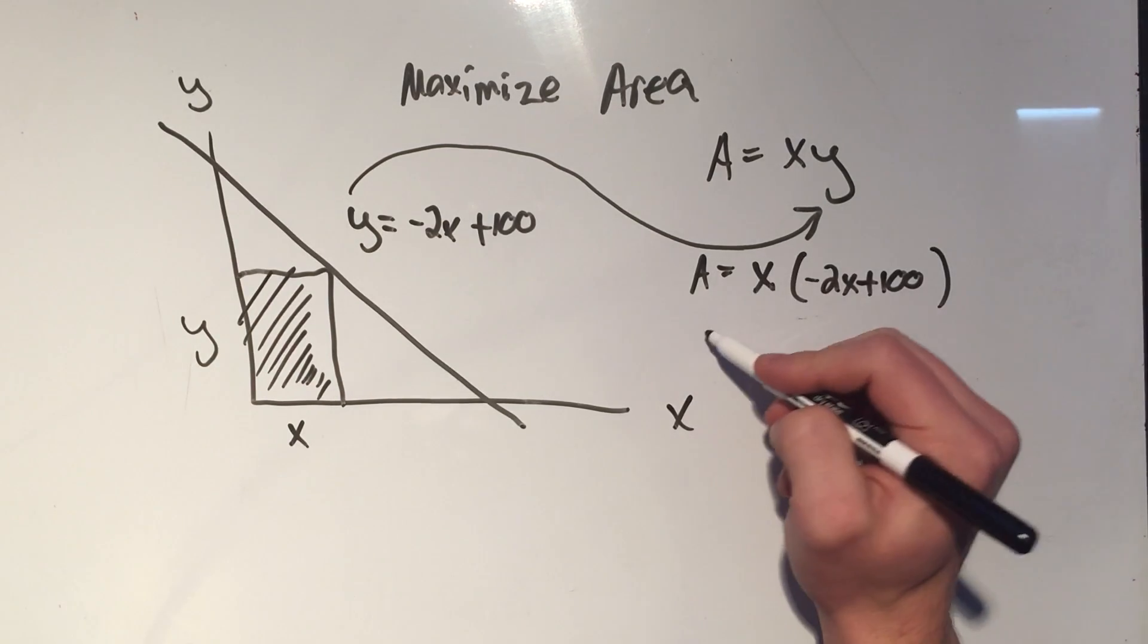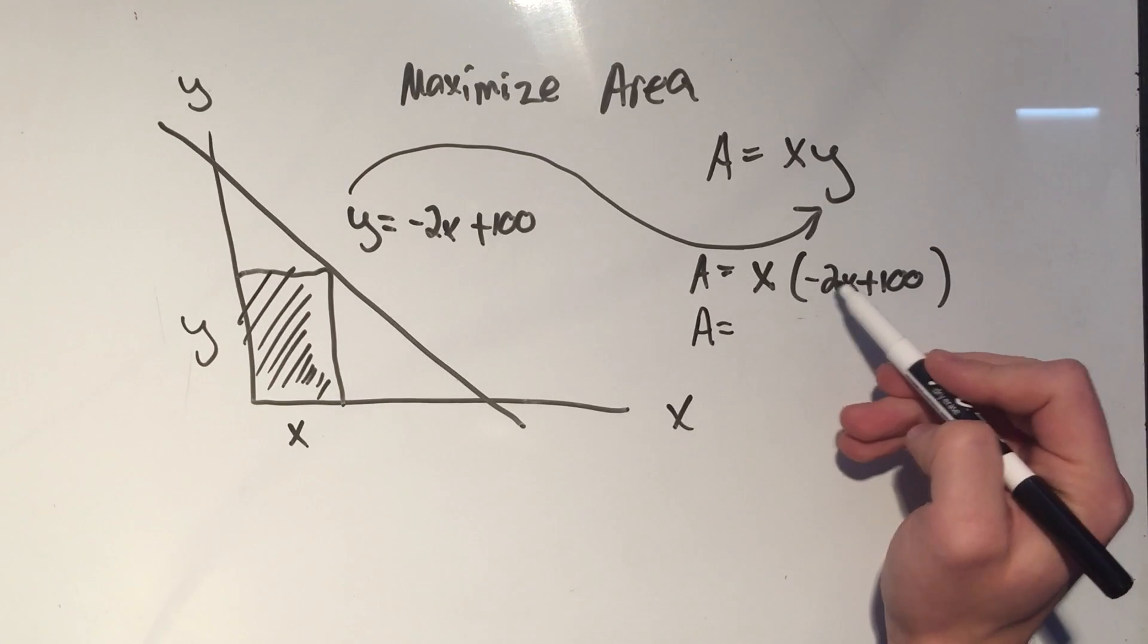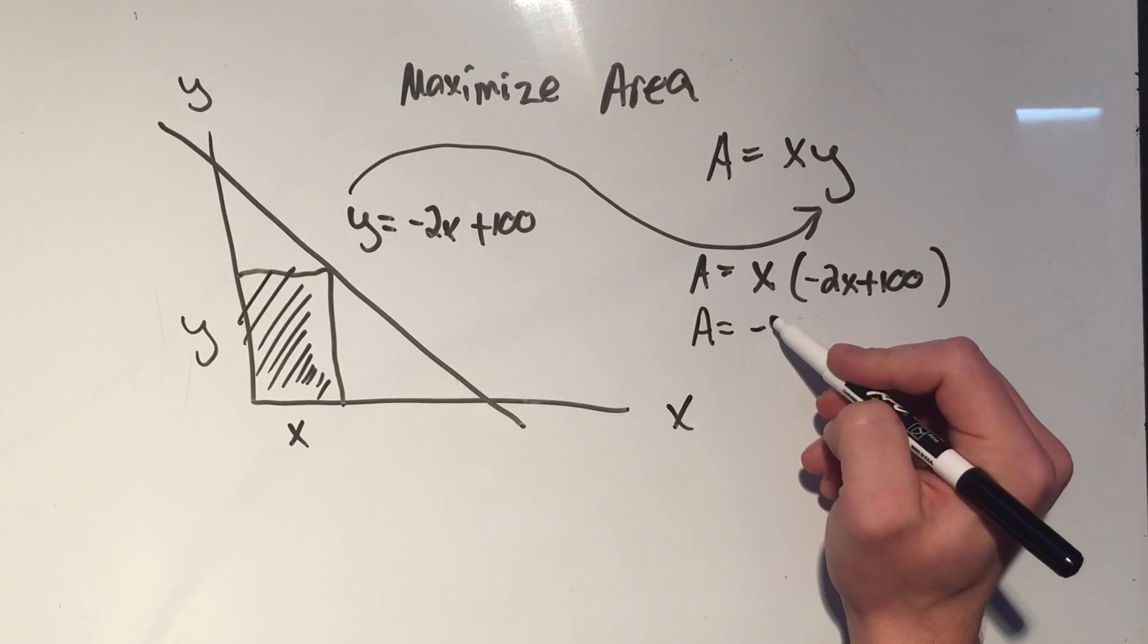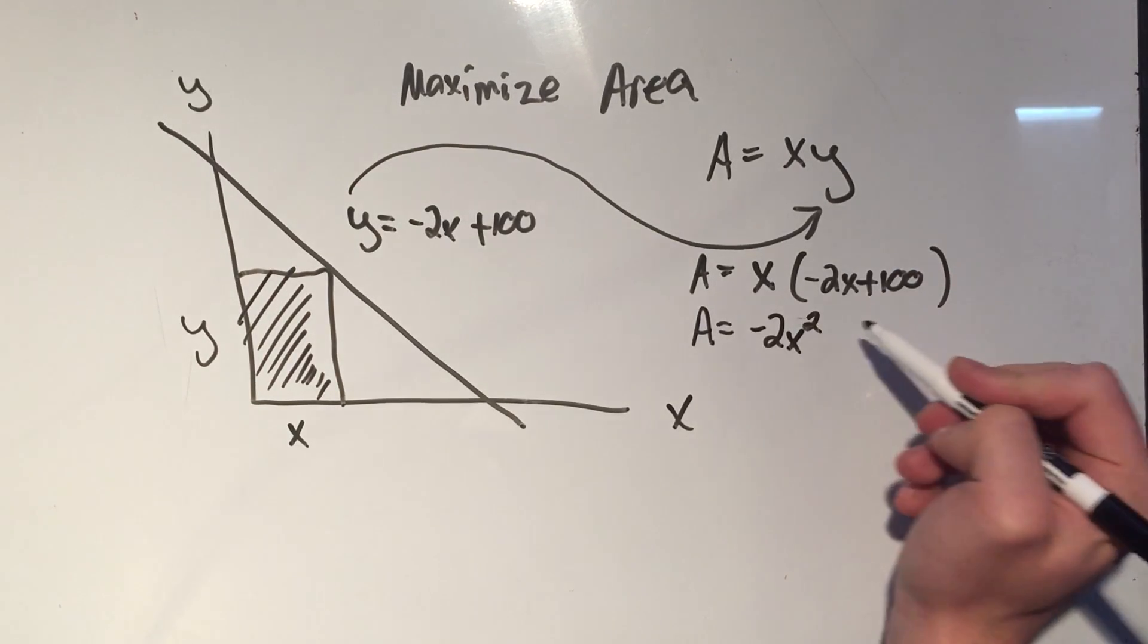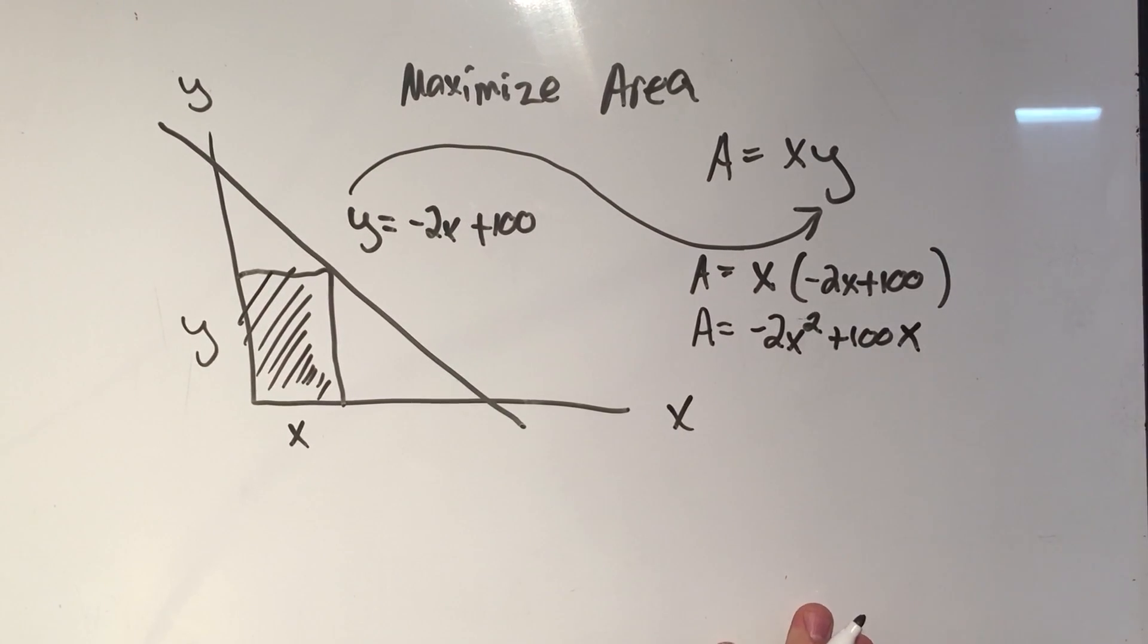You should always get in the habit of simplifying this thing before you take the derivative. So if I distribute this x through, that would be minus 2x squared plus 100 times x. And now my area is expressed solely in terms of x. This is the thing I want to maximize. This is the thing I want to take the derivative of.